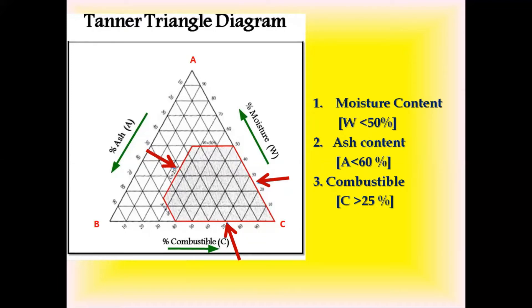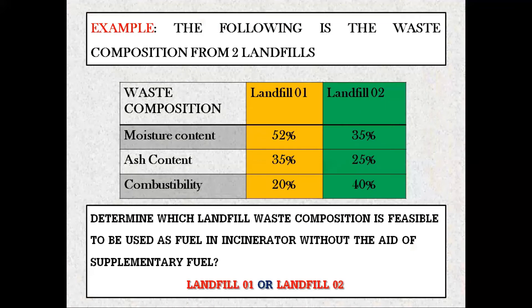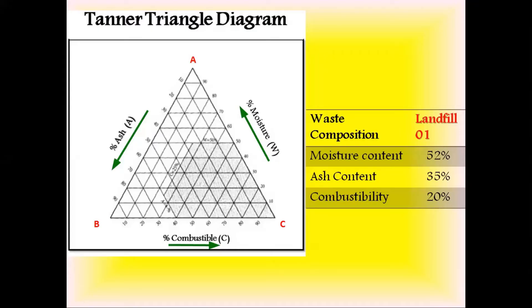For better understanding, let us use this example. The data in the table represents the waste compositions collected from two different landfills — landfill 1 and landfill 2. Based on this hypothetical raw data, we will use the tenor diagram to determine whether landfill 1 or landfill 2 waste composition is feasible to be used as fuel in an incinerator. Let's plot step by step and find the point of intersection for landfill 1, where moisture content is 52%, ash content is 35%, and combustibility is 20%.